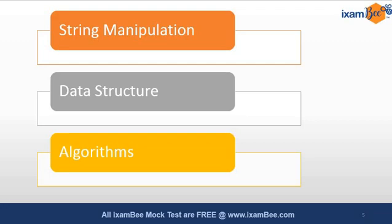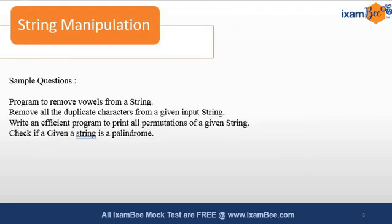Now I will show you some sample questions that are very helpful for Phase 2 coding. For string manipulation, some sample questions are shown on screen. The first question is a program to remove vowels from a string — you are given a string with or without spaces and must identify and remove vowels, writing an efficient function. The parameters and expected result will be given in the question itself. These listed questions are 10-marker questions.